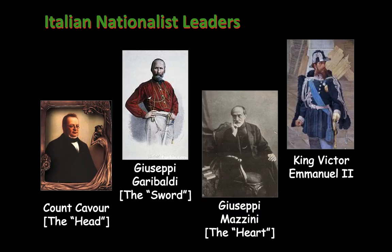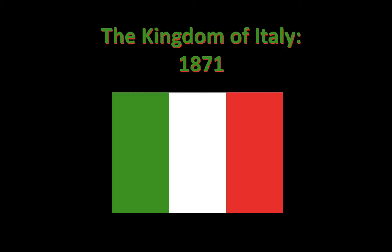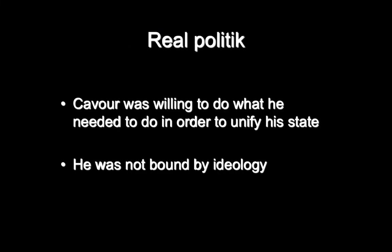Here are the leaders again in the Italian unification movement: Count Cavour, Garibaldi, Mazzini, and King Victor Emmanuel. Cavour has a title — he's an old member of the aristocracy, so it's Count Cavour. Giuseppe Garibaldi and Giuseppe Mazzini aren't part of aristocratic life. Italy has a new flag. Cavour was willing to do what he needed to do to achieve his goal of unifying the state — this concept is called realpolitik, and we're going to see this also mentioned when we talk about the German state.